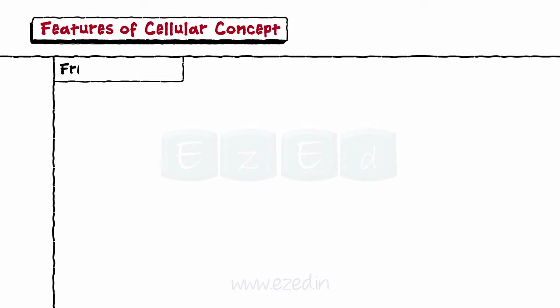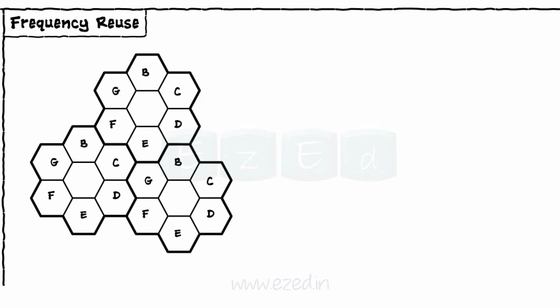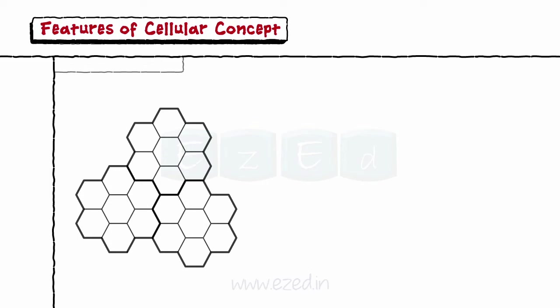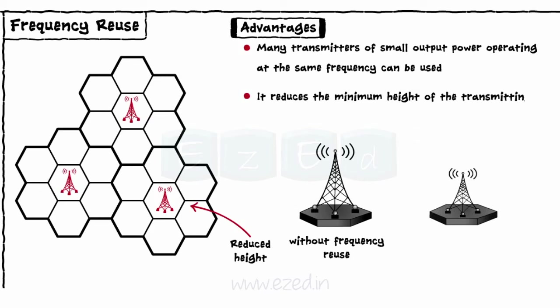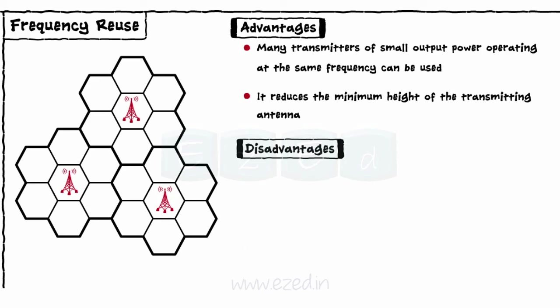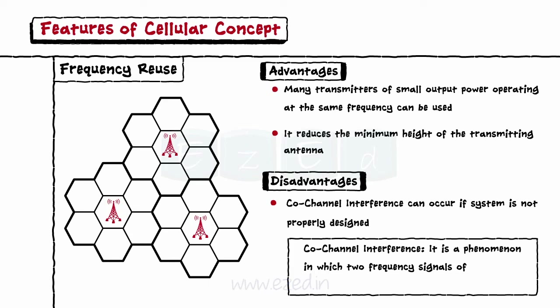Now let's see the features of the cellular concept. The first feature is frequency reuse, in which the same set of frequencies are used for radio channels located in different areas. As shown in the diagram, every cell named A uses the same set of frequencies. The advantages of frequency reuse are that many transmitters of small output power can operate at the same frequency, and it reduces the minimum height of the transmitting antenna since each antenna covers only a small distance. The disadvantage is that improper design may lead to co-channel interference, a phenomenon where two frequency signals of adjacent channels interfere with each other.